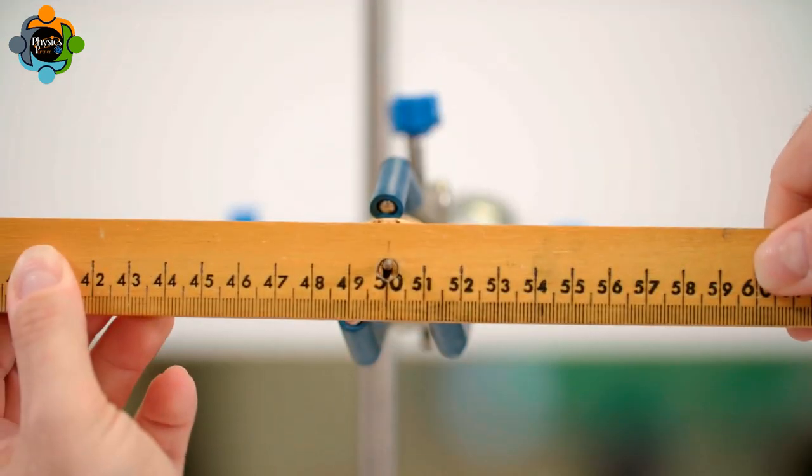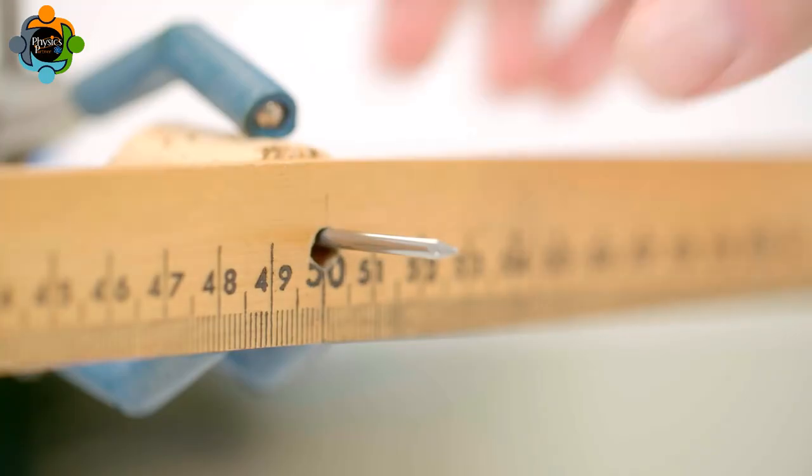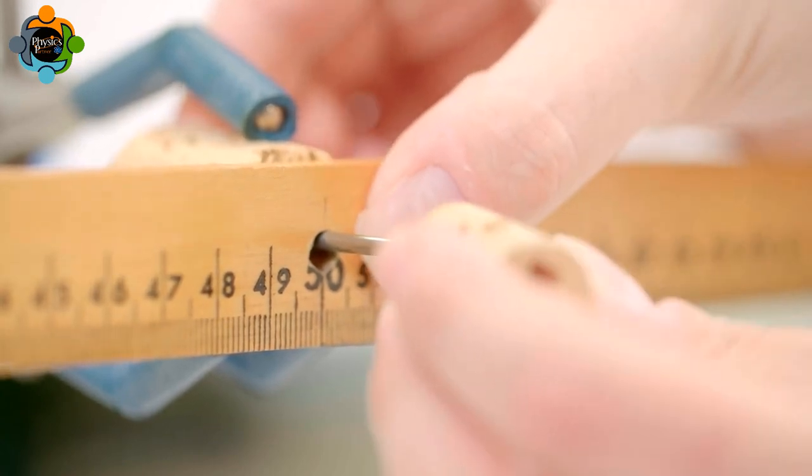Then the meter rule is balanced on the pivot and secured in place with the second cork.